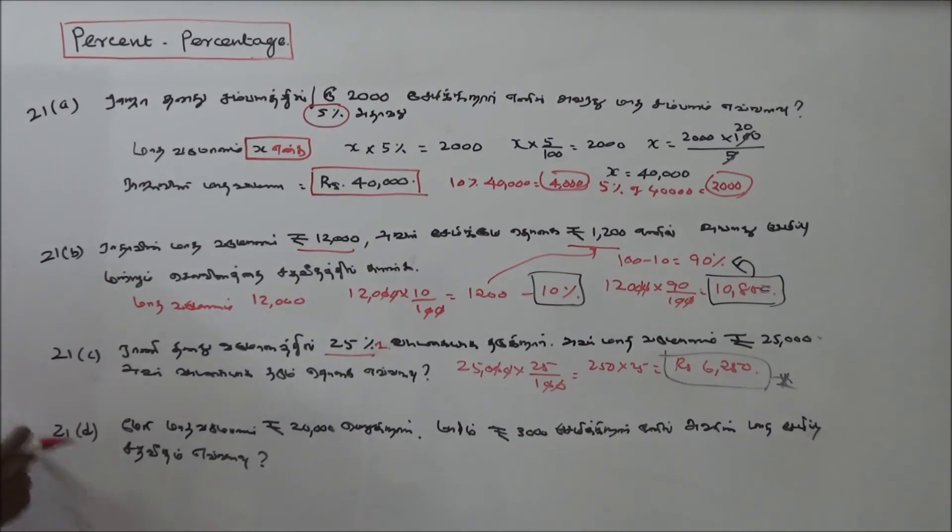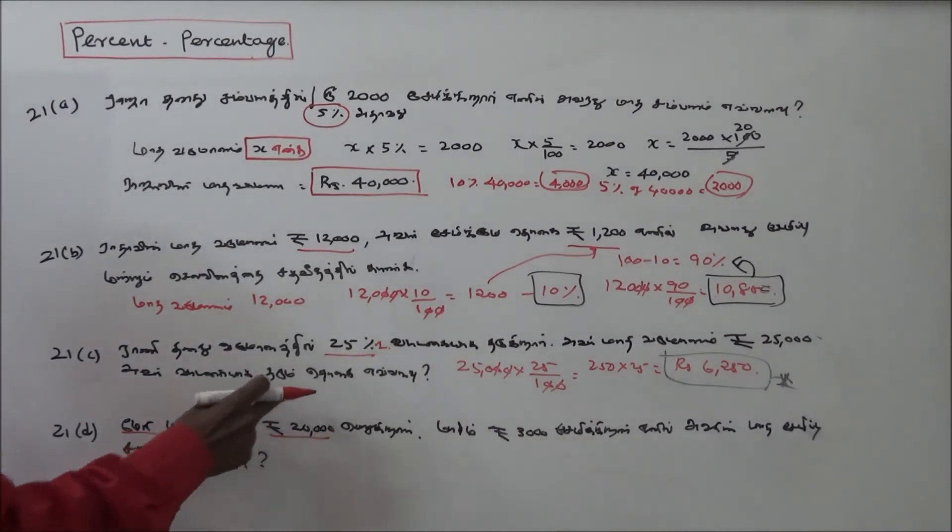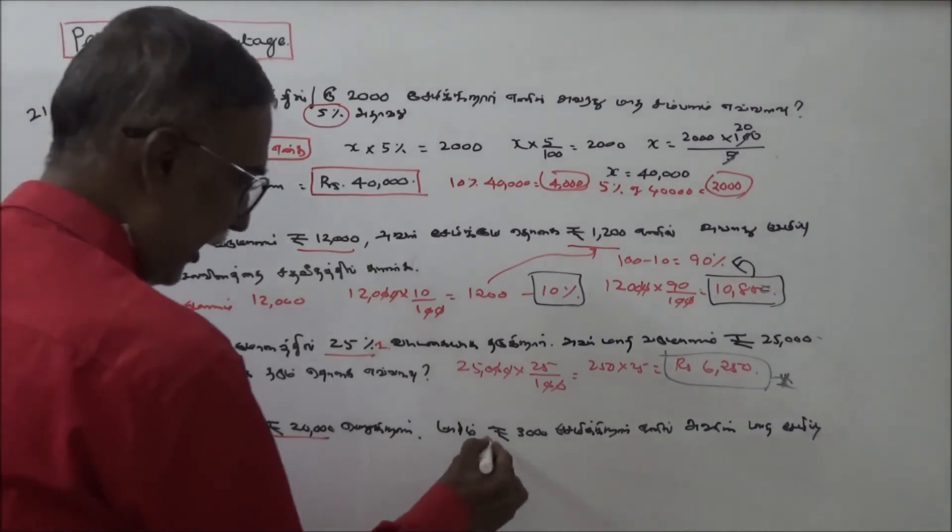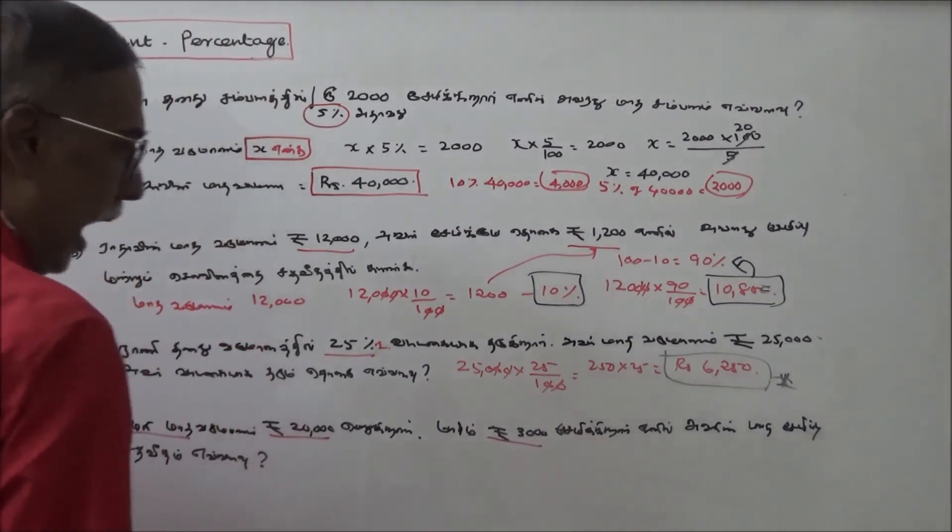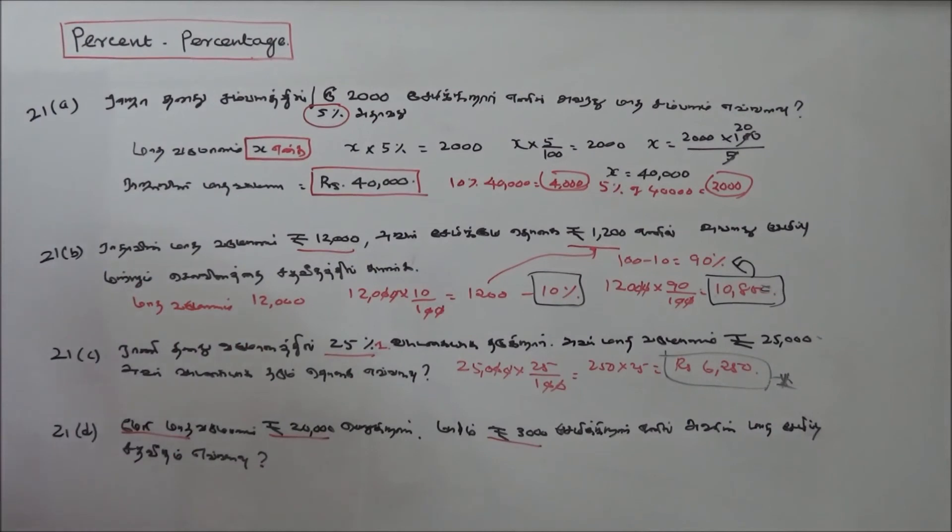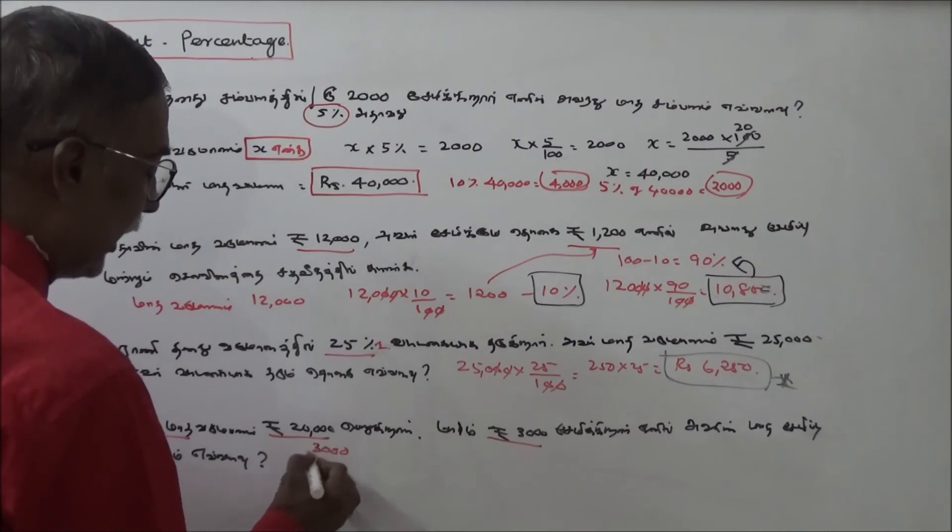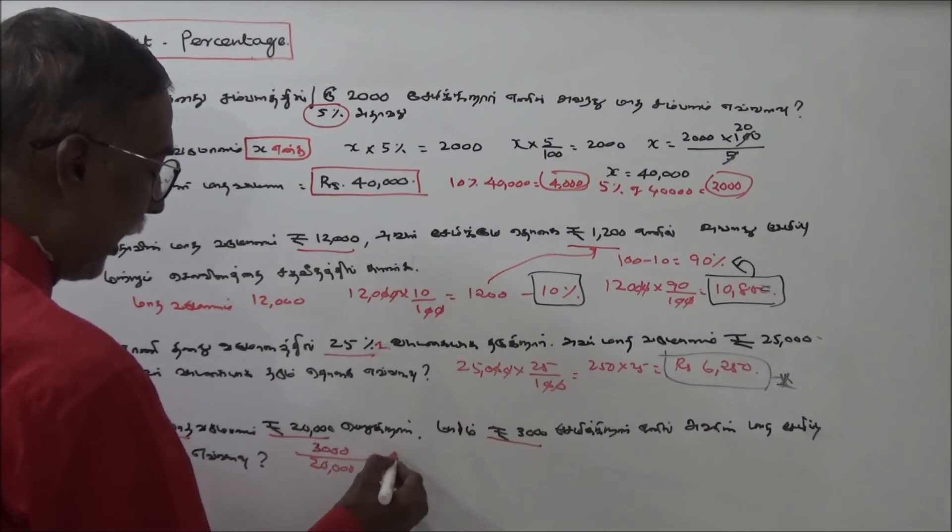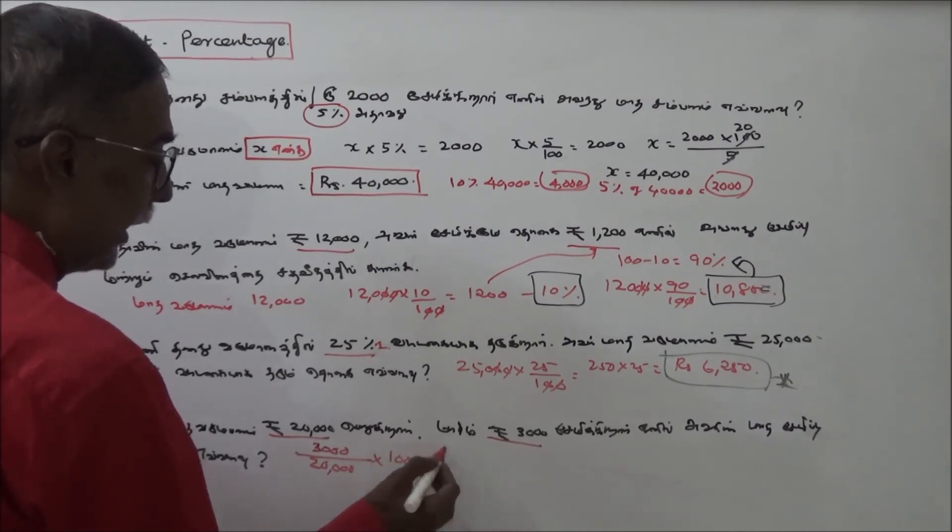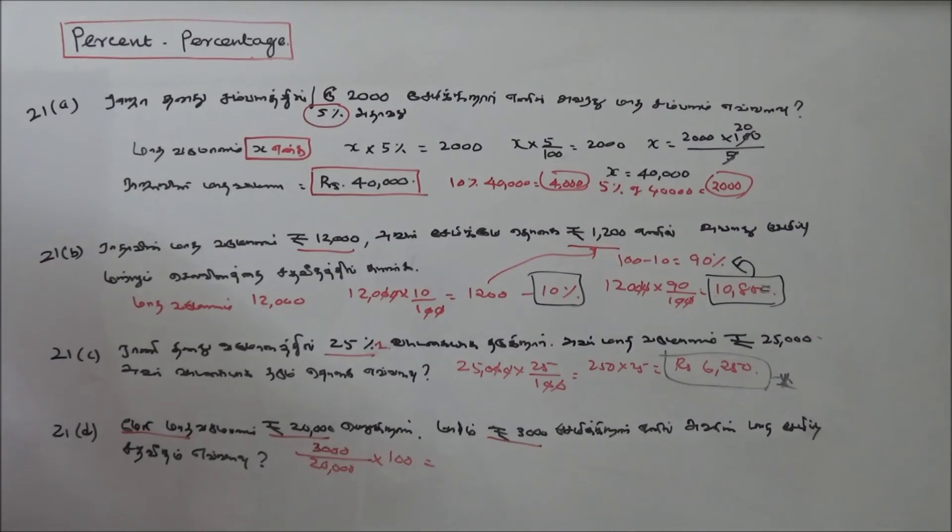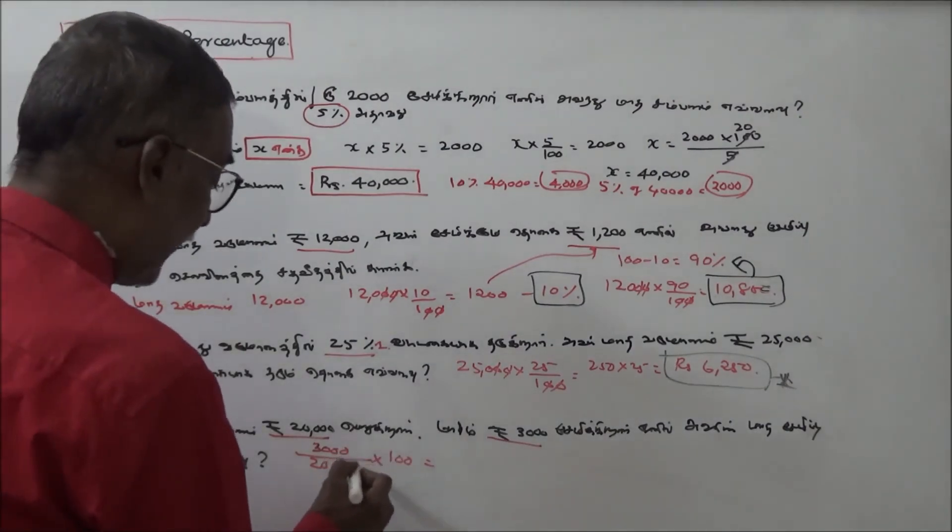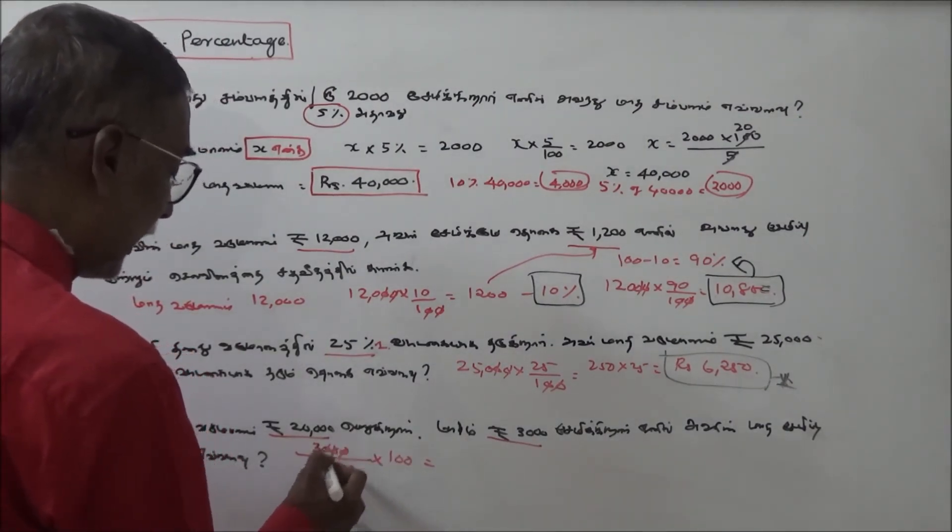Problem 21d: Mary's monthly income is 20,000 rupees. She saves 3,000 rupees monthly. What is her savings percentage? It's a simple problem.